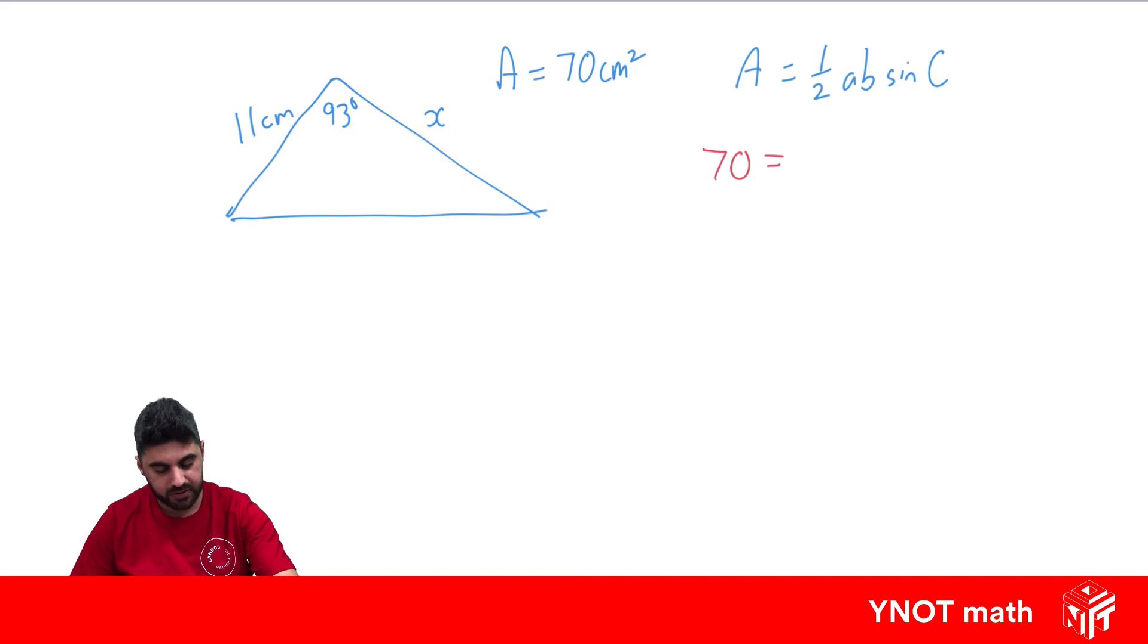So let's put in everything we know. This time we know the area is 70 equals a half times our two sides multiplied together, so 11 times x times sine 93. Let's multiply everything by two first to get rid of the half. By doing that, the half and the two cancel out because that just gives us one. So we get 140 equals 11x sine 93.